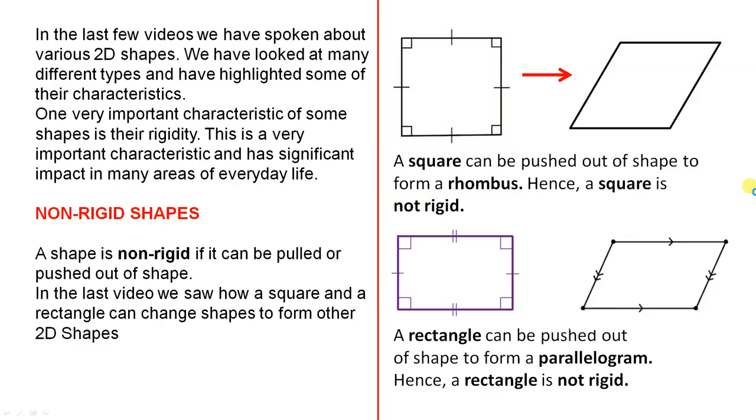In the last few videos we have spoken about various 2D shapes. We have looked at many different types and have highlighted some of their characteristics. One very important characteristic of some shapes is their rigidity. This is a very important characteristic and has significant impact in many areas of everyday life.